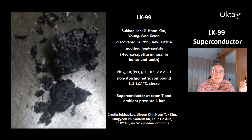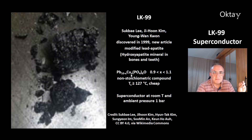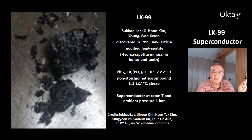This compound is a modified lead-apatite. Apatites are a variant of hydroxyapatite — the same class of materials. Hydroxyapatite is a mineral found in bones and teeth. This is the formula of LK99: a lead-copper-phosphate oxide. X is important in this formula — you get a superconductor only if X is between 0.9 and 1.1, meaning about one tenth of the lead ions are replaced by copper ions. This is a non-stoichiometric compound. Its critical temperature is, according to these scientists, above 127 degrees Celsius, making it unique. And the elements in this formula are all quite cheap, which is another big advantage of LK99.